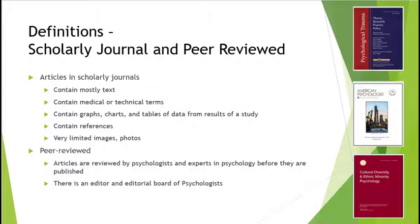Articles in scholarly journals contain mostly text, contain medical and technical terms, and usually contain graphs, charts, and tables of data from the results of a study. They contain references and are very limited in images and photos. Peer-reviewed means the articles are reviewed by psychologists and experts in psychology before they are published. There is an editor and an editorial board of psychologists that review articles before publication. Peer-reviewed journals add an extra level of credibility and reliability to the information you're reading.